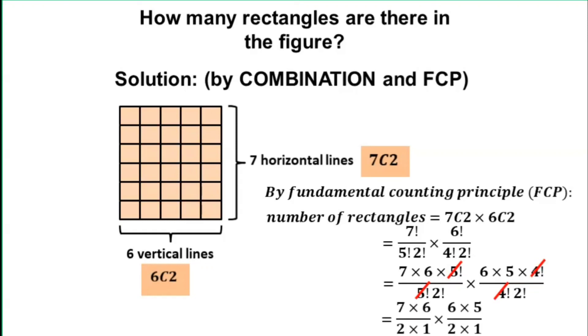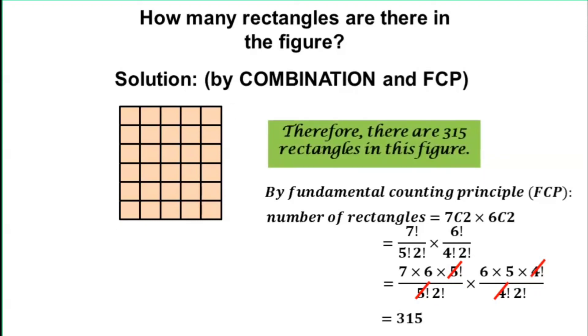Simplifying, we have 21 times 15, which is equal to 315. Therefore, there are 315 rectangles in this figure.